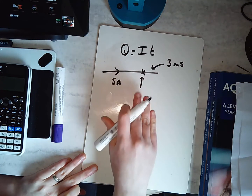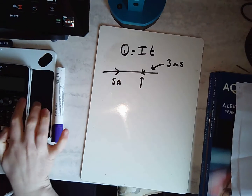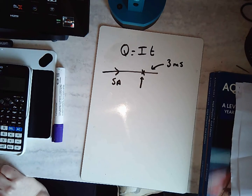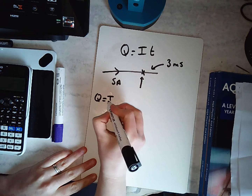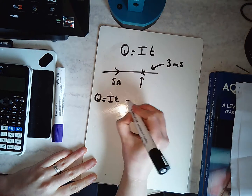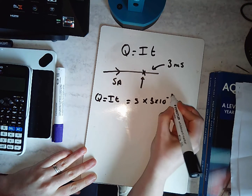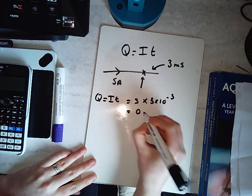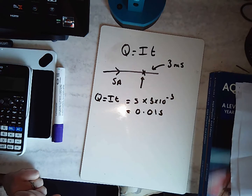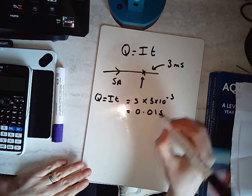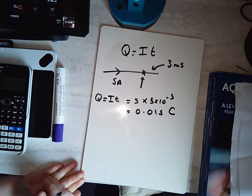Using the formula, work out which charge passes this point in 3 milliseconds. Using Q = IT, I'm going to have 5 times 3 times 10 to the minus 3, and that's going to be 0.015. So 0.015 coulombs is going to pass this point.